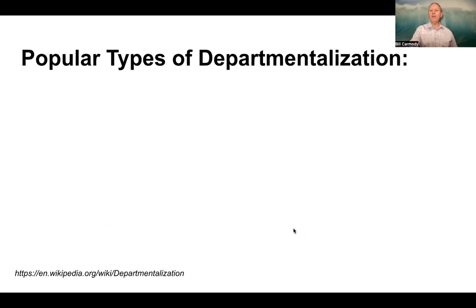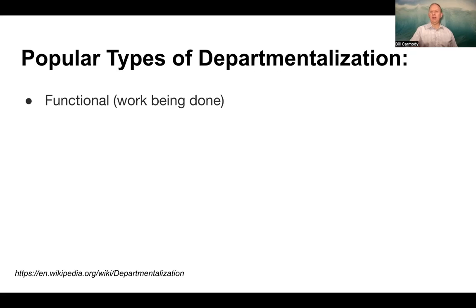So there are popular types of departmentalization. One is functional work — what is the thing that needs to be done and who's going to do it? The next is product, where I can organize my departments based on which products are being launched.